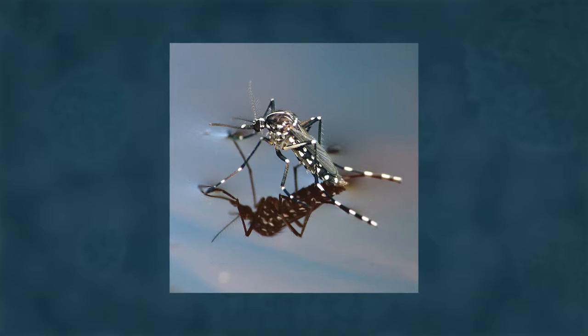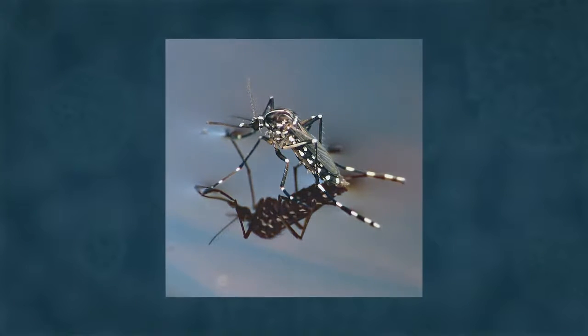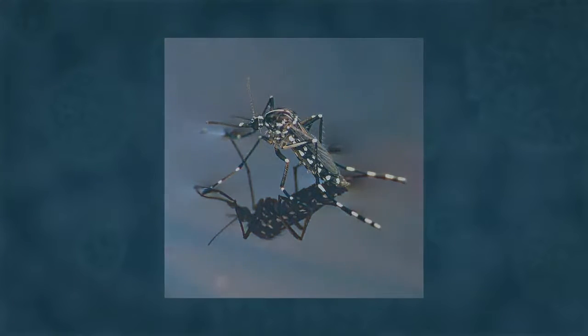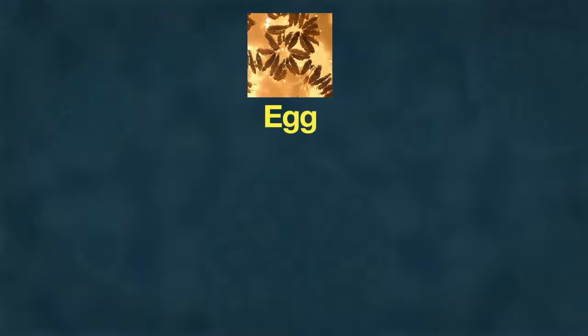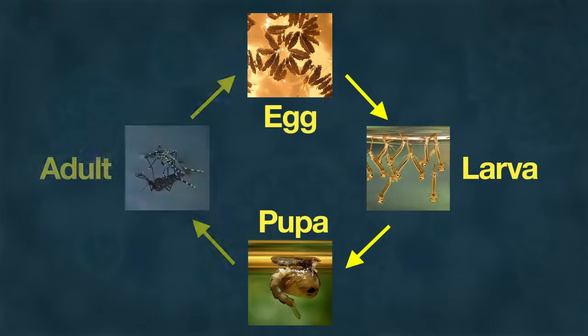The life cycle of a mosquito, like that of many other insects, has four stages—egg, larva, pupa, and adult.